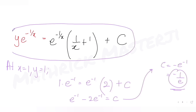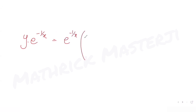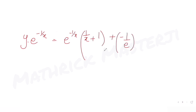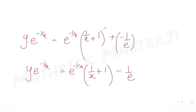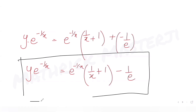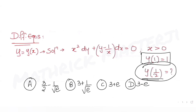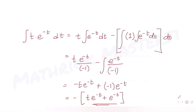So the solution of the differential equation is: y · e^(-1/x) = e^(-1/x)(1/x + 1) - 1/e. We have been asked to find y(1/2), the value of y at x = 1/2.